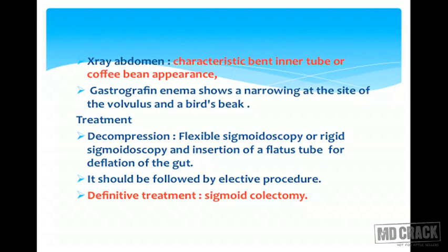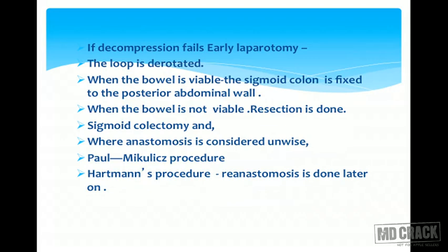X-ray abdomen shows the characteristic bent inner tube or coffee bean appearance. Gastrografin enema shows narrowing at the site of the volvulus and a bird's beak appearance. Treatment is mainly decompression by flexible or rigid sigmoidoscopy and insertion of a flatus tube for deflation of the gut, followed by elective procedures. Definitive treatment is sigmoid colectomy. If decompression fails, early laparotomy should be done.